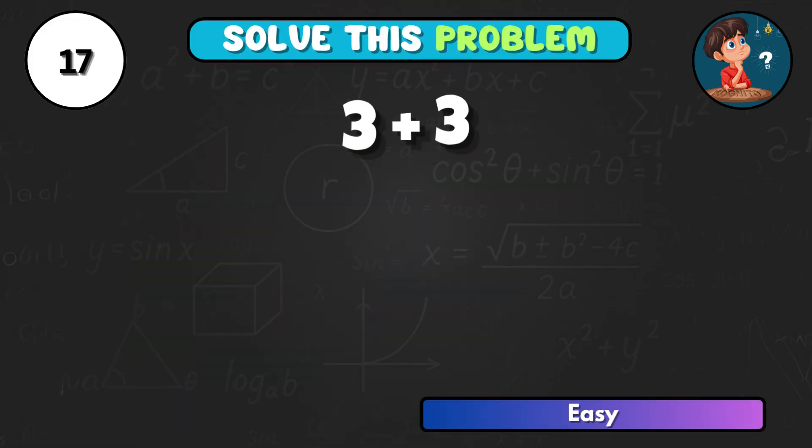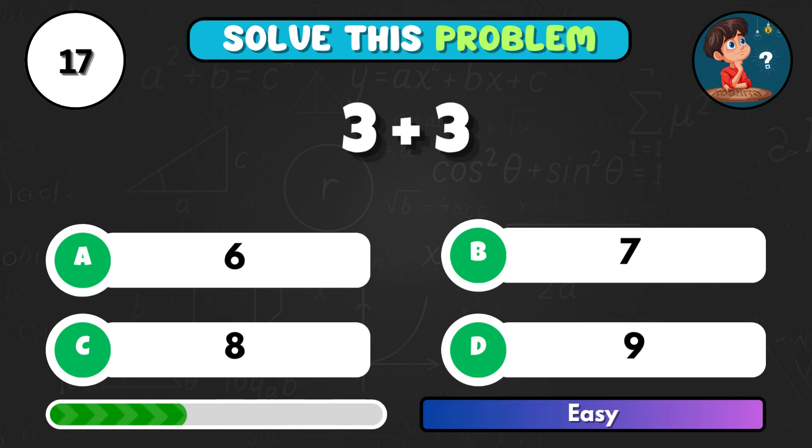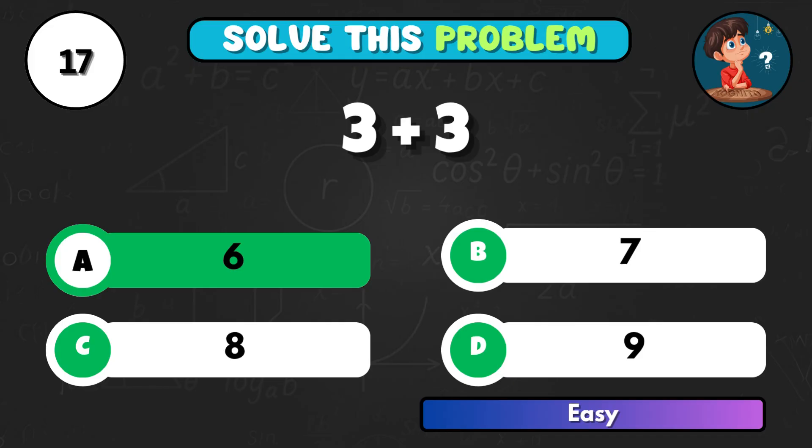What do you get when you double 3? The right letter is A equals 6.